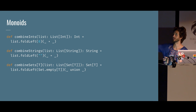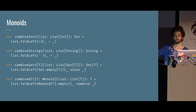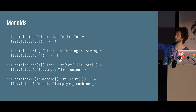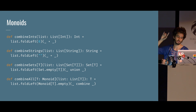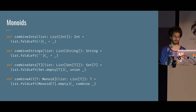We can do the same thing for strings using empty string and concatenation, or for sets using empty set and set union. More generally, we can generalize all of these into a combine-all function that takes any list of T as long as T has a monoid, and folds it using that monoid's empty and combine. This is really useful, and we'll see why — because there are a lot of monoids around.